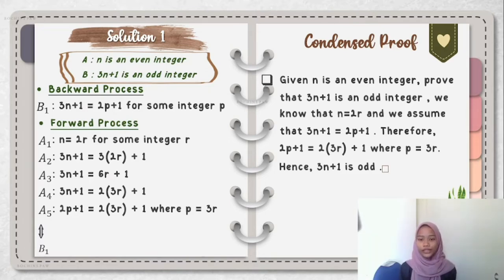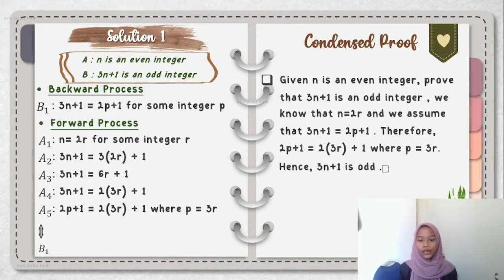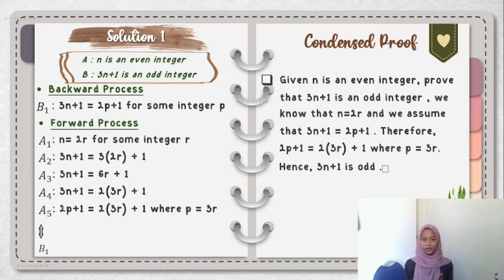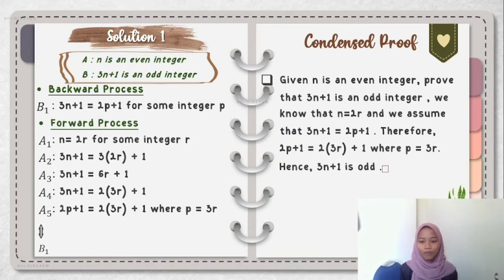For the condensed proof: given N is an even integer, prove that 3N plus 1 is an odd integer. We know that N is equal to 2R. We assume that 3N plus 1 is equal to 2P plus 1. Therefore, 2P plus 1 is equal to 2 multiplied by 3R plus 1, where P is equal to 3R. Hence, 3N plus 1 is odd. This statement is proved.